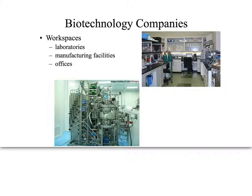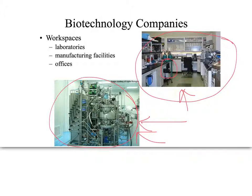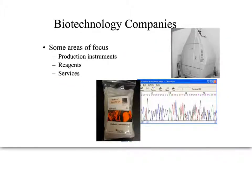Looking at the different kinds of work environments: there are labs, which look kind of like a biology or chemistry lab — people work at their workstations with computers and equipment. Then there are manufacturing facilities, which may be sterile environments with lots of machinery, tubing, piping, and stainless steel. There are always offices too, where people can go to drink their coffee and work on their computers.